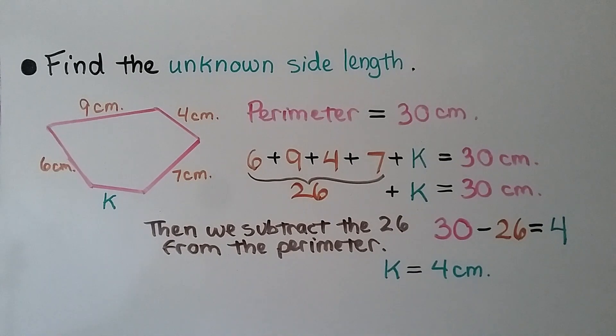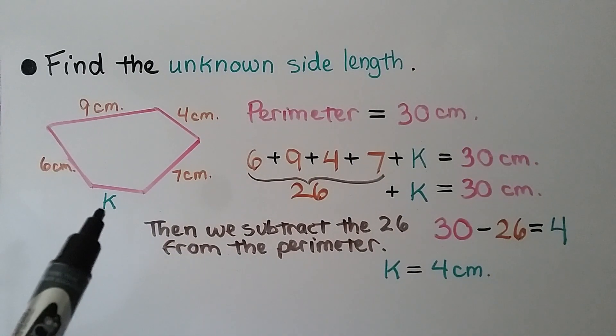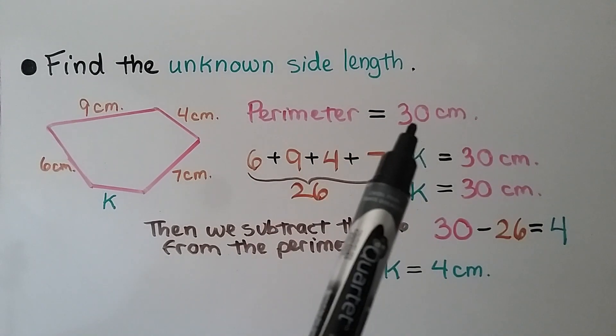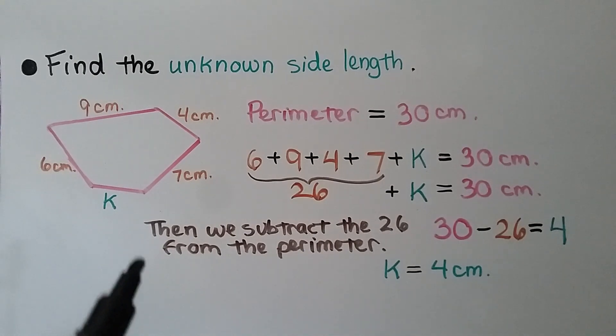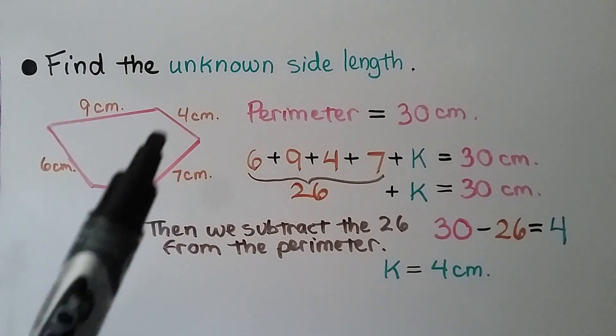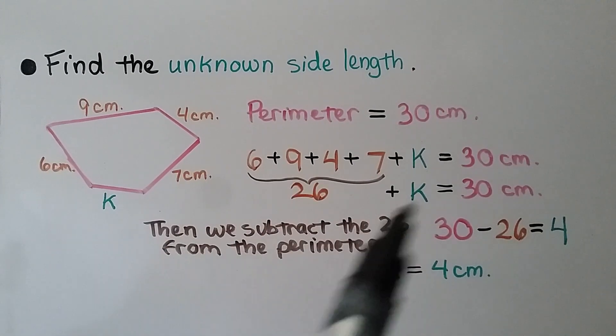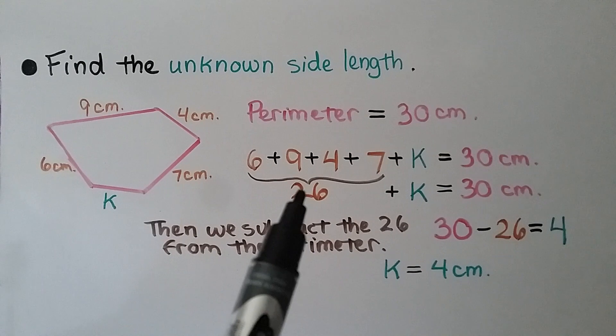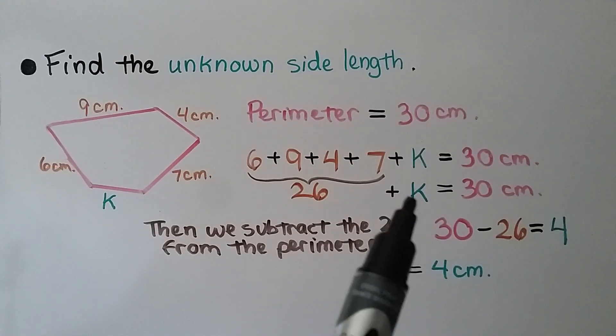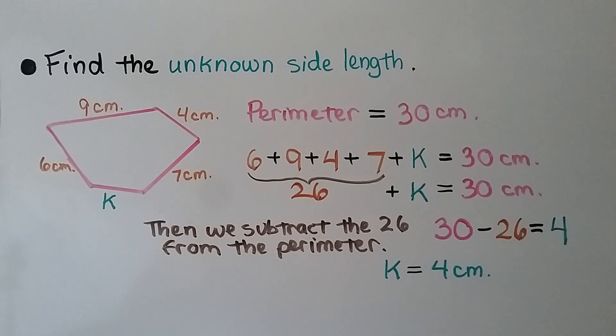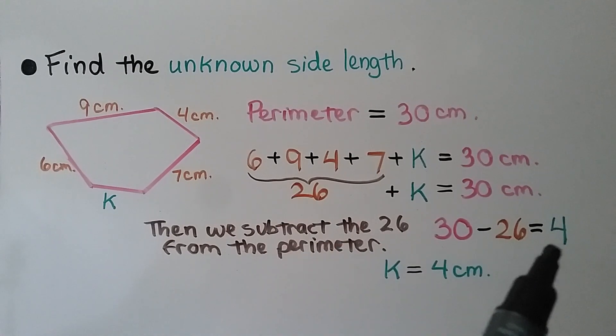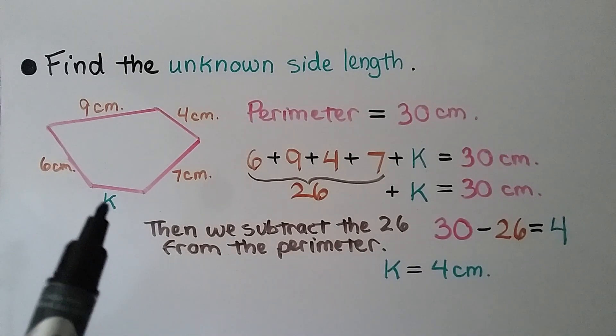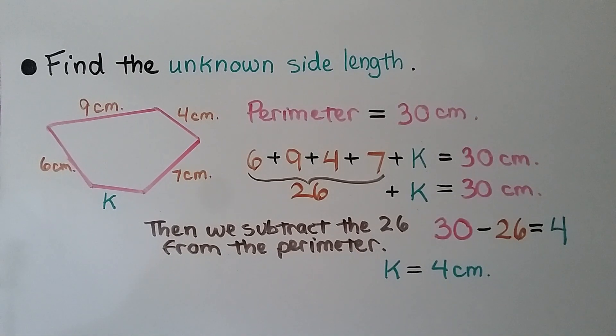We need to find the unknown side length. We can see here it's represented with the letter k. That's our variable. It tells us the perimeter equals 30 centimeters. We add 6 plus 9 plus 4 plus 7, and plus this side k, it should equal 30 centimeters. We add the 6 plus 9 plus 4 plus 7, that equals 26. That means 26 plus some amount k equals 30 centimeters. We subtract the 26 from the perimeter they gave us. 30 minus 26, we take this 30 and subtract this sum, 26, and it equals 4. So we know the missing amount for k is 4 centimeters. k equals 4 centimeters.